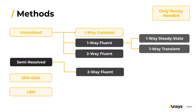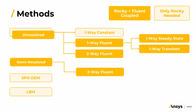There are three coupling options available in which external CFD solvers are not required. They are the one-way constant, the SPH, and the lattice Boltzmann. And there are methods in which particle-fluid interactions are computed by leveraging both ANSYS Rocky and ANSYS Fluent solvers.